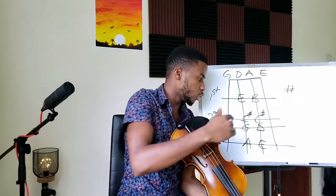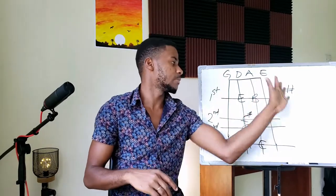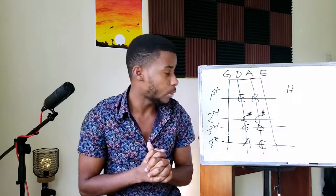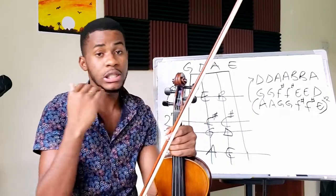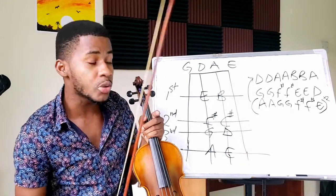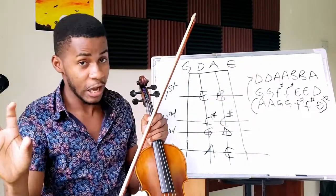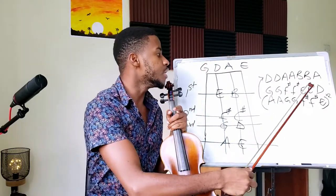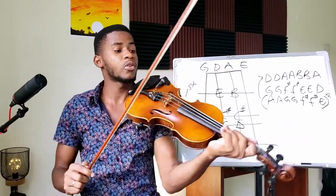Before we show you the notes on the other strings, let's play Twinkle Twinkle Little Star using just the notes on these two strings. All these notes are going to be played on the D and A string. For example, two D's — those are open D strings. If it were the higher D, played with third finger, you'd see an apostrophe with it. Two open A strings — open string means no finger on it. Two B's, which are first fingers on the A string.